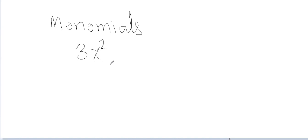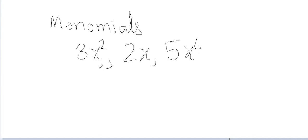Now let's study different types of polynomials. First, monomials — polynomials which have only one term. For example, 3x squared, 2x, and 5x to the power 4 all have only one term, so all three of them are called monomials.